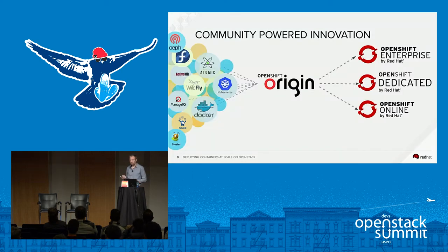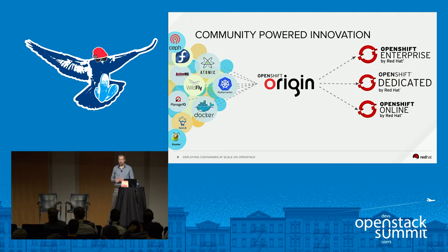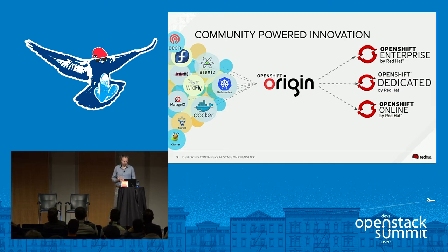In terms of OpenShift and the way we build it, it's what we call community-powered innovation. Things like Project Atomic, Kubernetes, Docker, and even middleware projects like Wildfly all fit into what we would refer to as a midstream project — OpenShift Origin — which is how we actually integrate all these pieces in the open and ultimately build the products that become OpenShift Container Platform. Red Hat is a leading contributor not just to OpenStack, but to Kubernetes and Docker and many of the other projects that make up this stack.